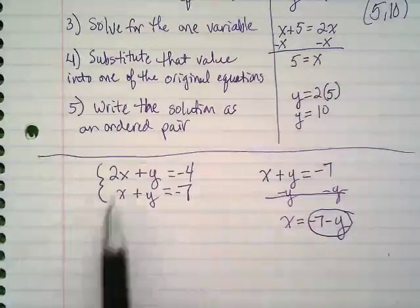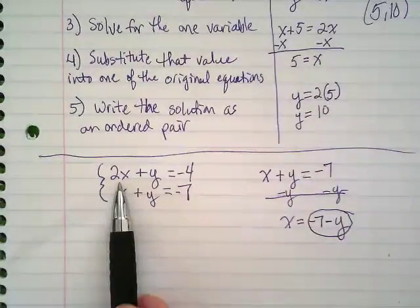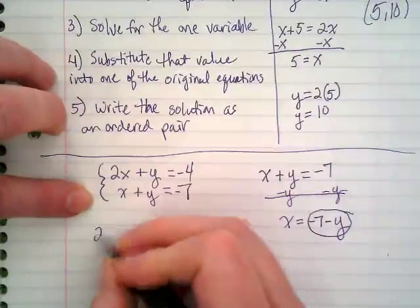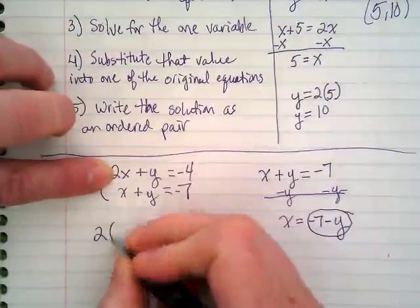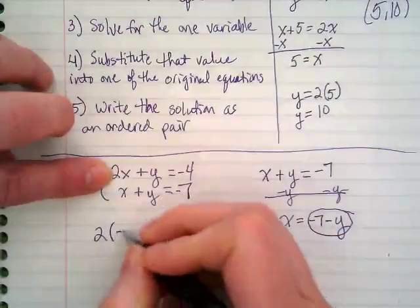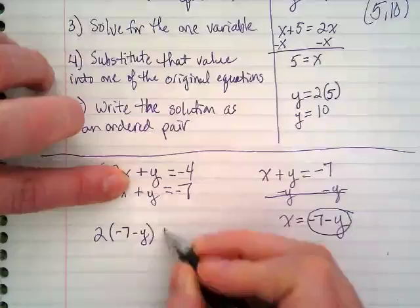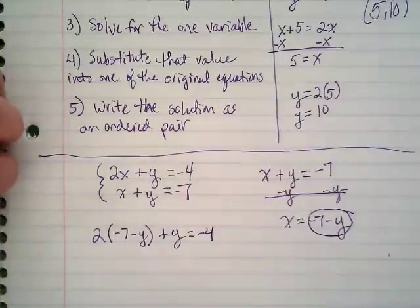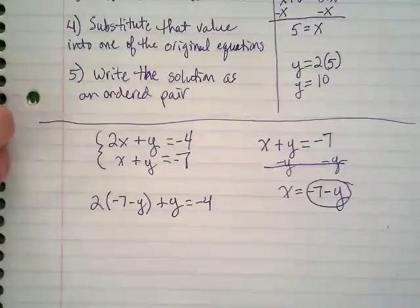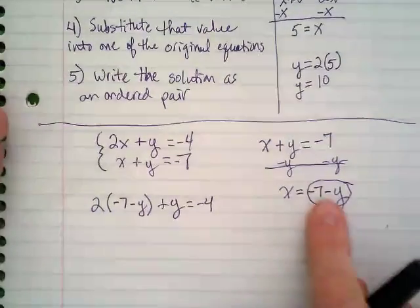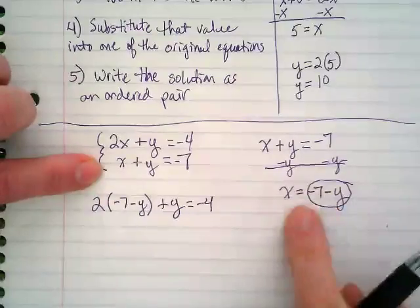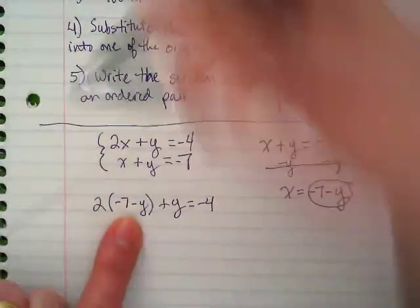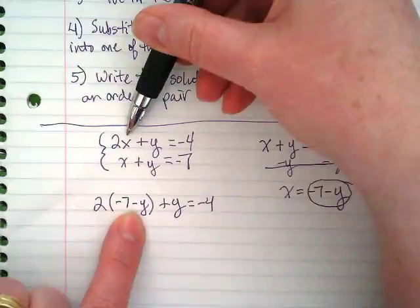I just found my expression. This expression is going to get plugged into the other equation. I can't plug it into the equation that I solved with. You should plug it into the other one. So I'm going to rewrite 2x as 2 times negative 7 minus y, plus y equals negative 4.